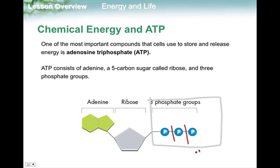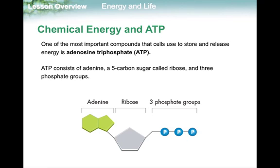An ATP molecule does have this adenine and this ribose connected, but the real important part is these three phosphates. What happens is that as your body or an organism creates the bonds between those phosphates, it's going to store energy up. To release that energy, they simply break the bonds.